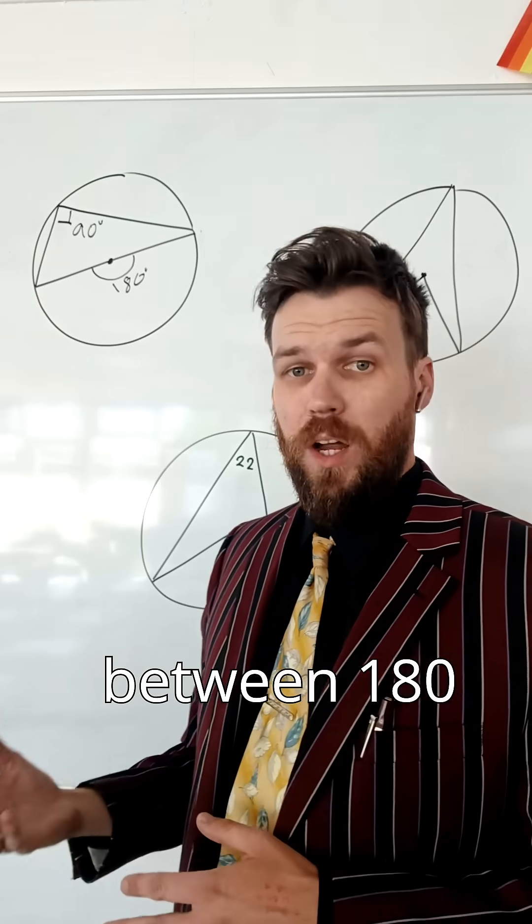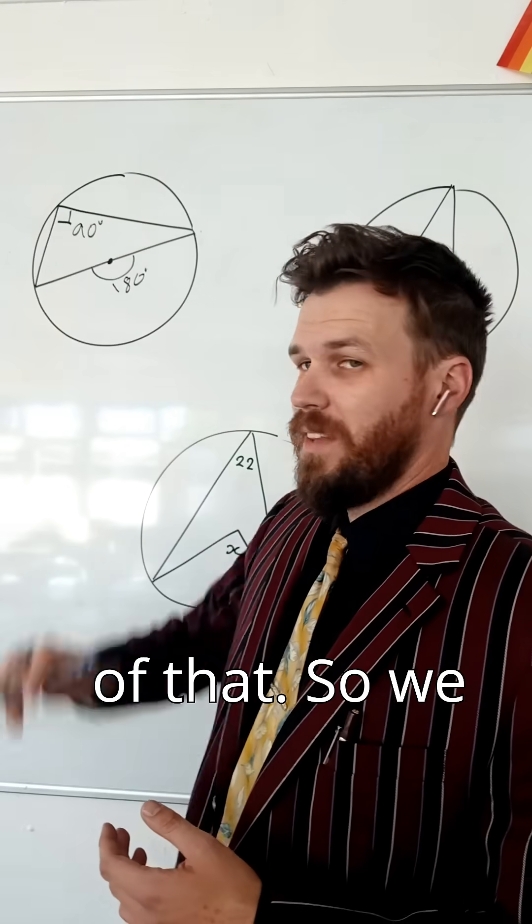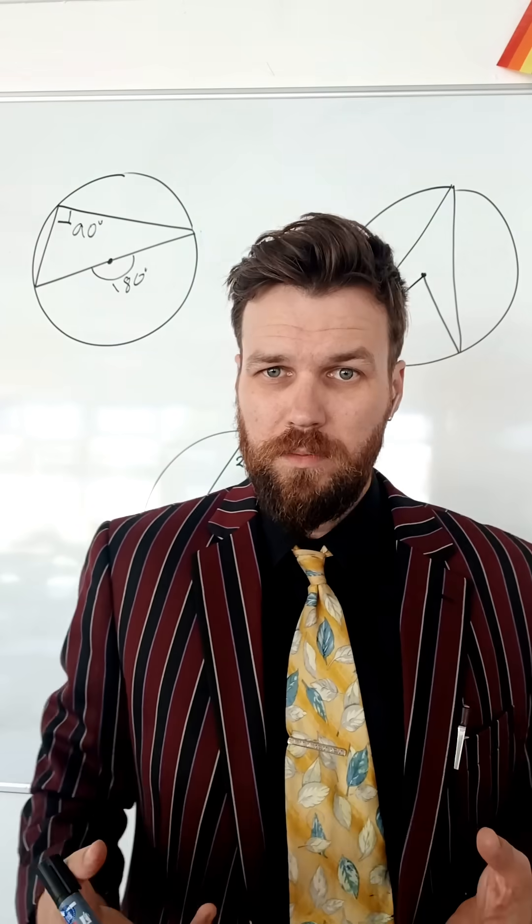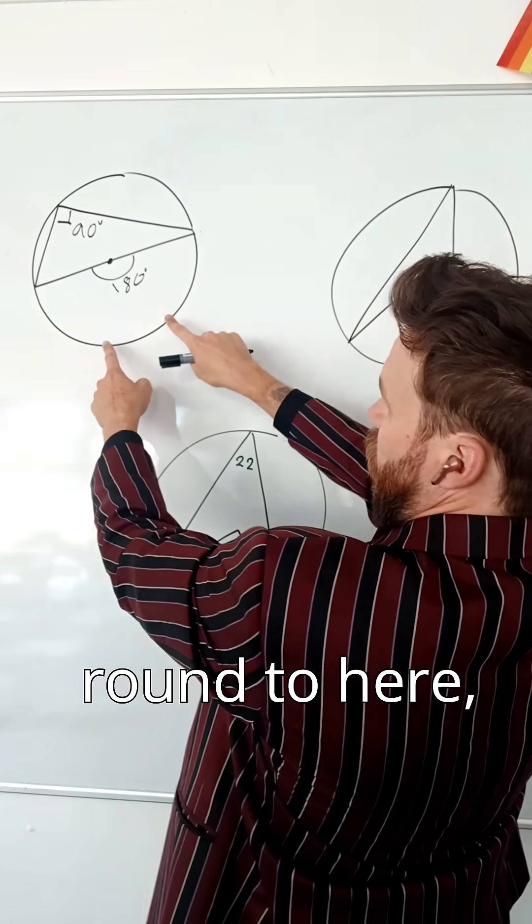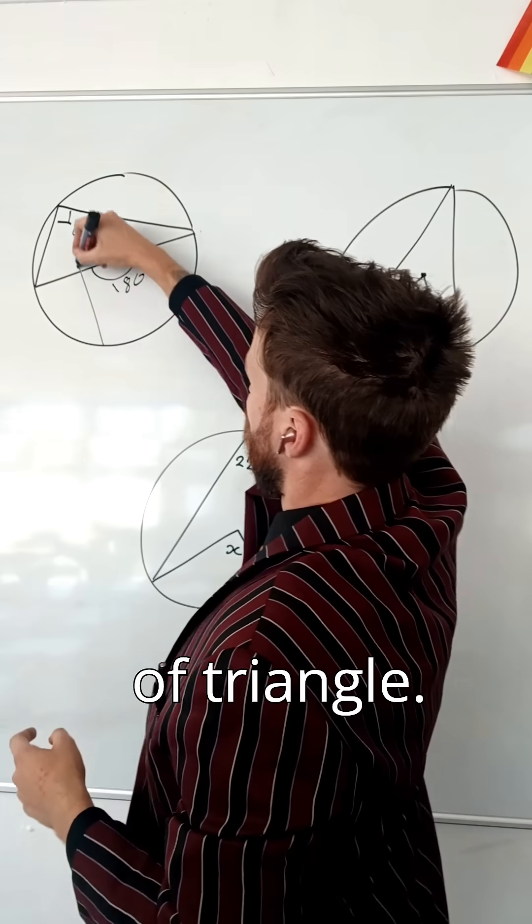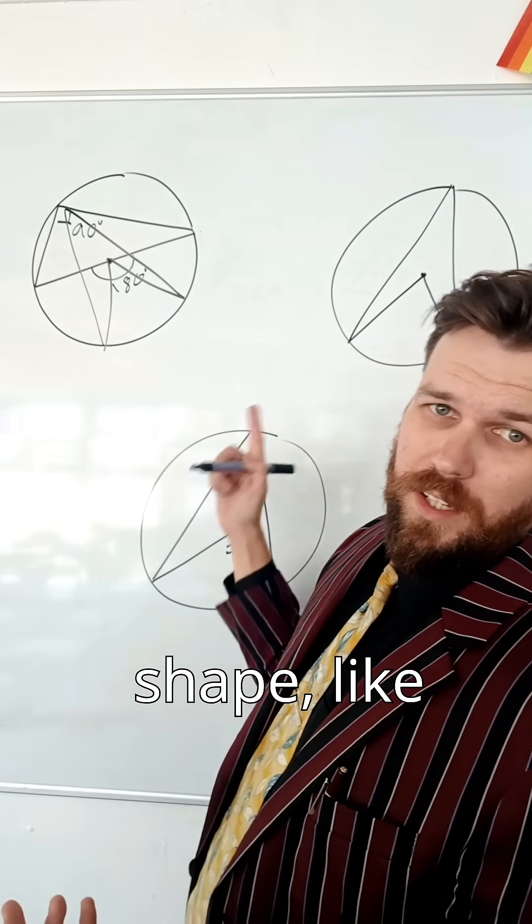And what do I know about the relationship between 180 and 90? Well, this is half of that, and that is double of that. So, we use that rule here. If I pulled these two points round to here, I would end up with this kind of triangle. Well, it stops being a triangle, I end up with this kind of shape, like this one here.